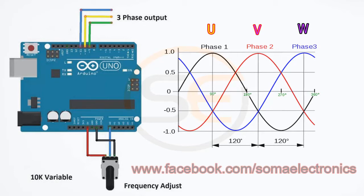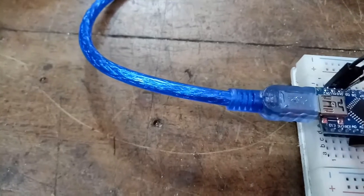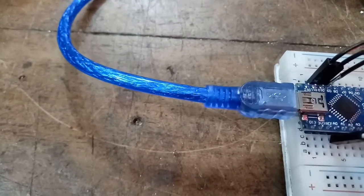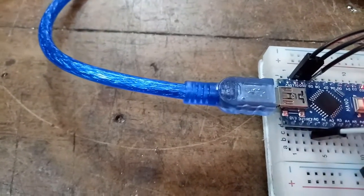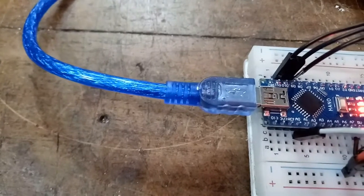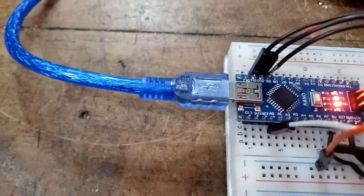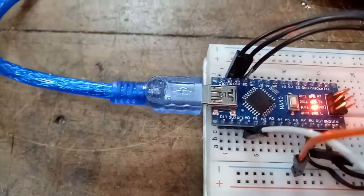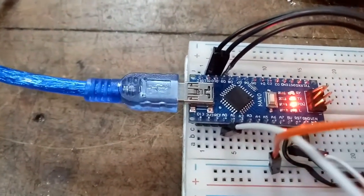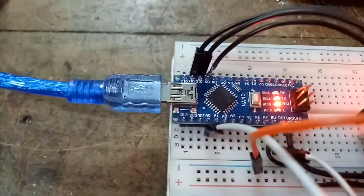What is PWM? PWM stands for Pulse Width Modulation. It is a type of digital modulation for controlling simple and complex electronic modules and devices.